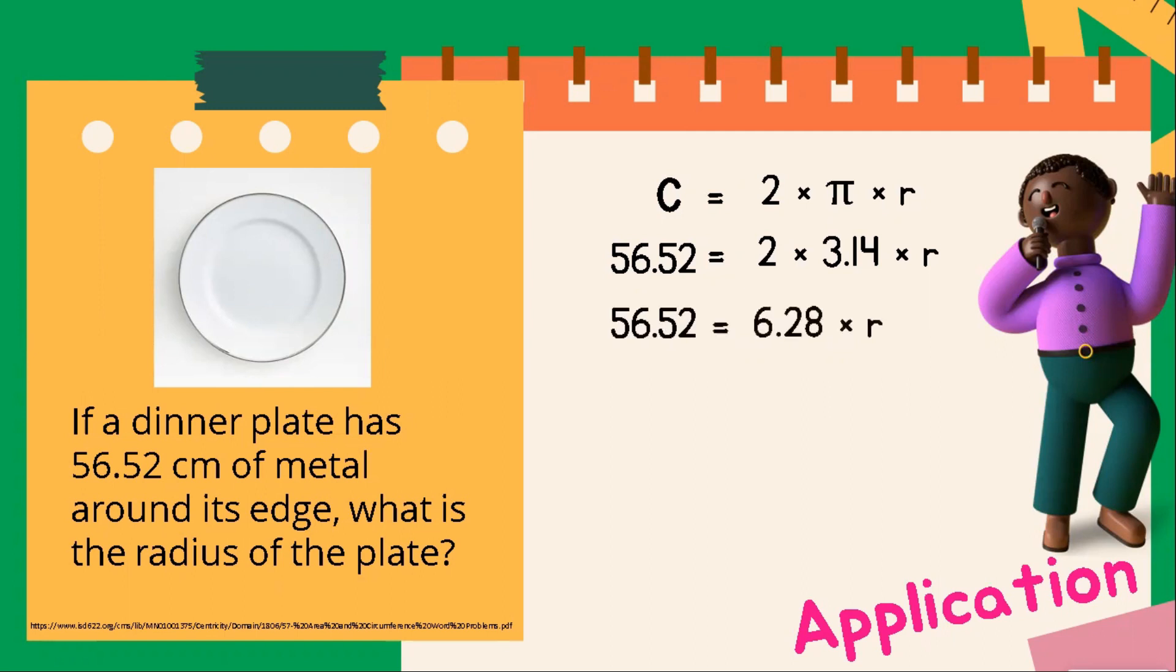Let's continue. To solve for r, let's divide both sides by 6.28. Let's cancel out.